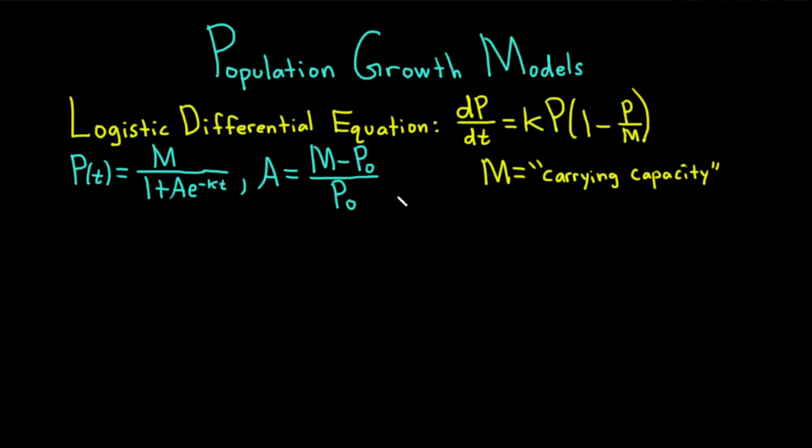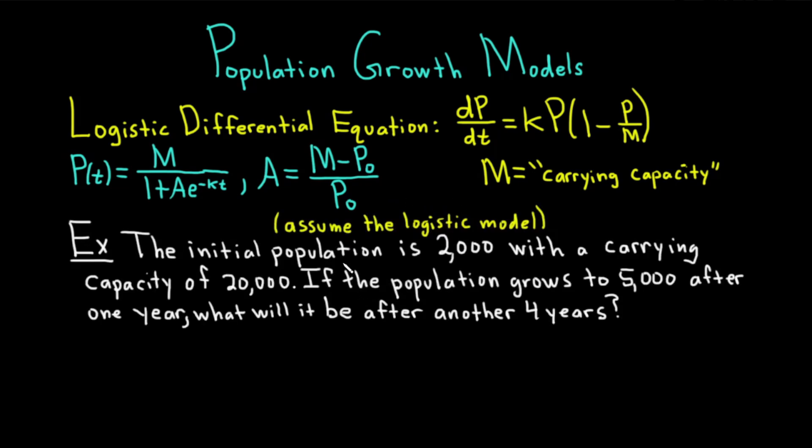Let's go ahead and do an example right away using these formulas. Here is our example, and we're going to assume the logistic model in this particular population growth scenario. The initial population is 2,000 with a carrying capacity of 20,000. If the population grows to 5,000 after one year, what will it be after another four years?